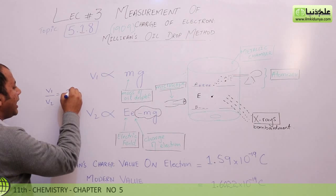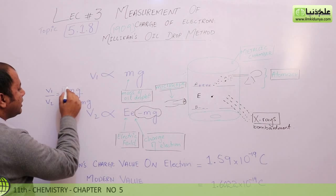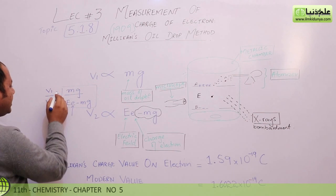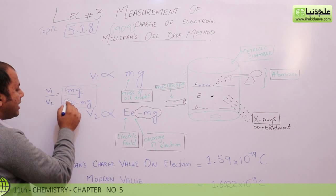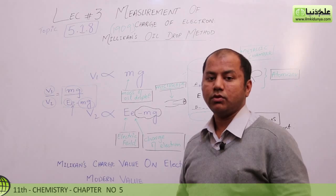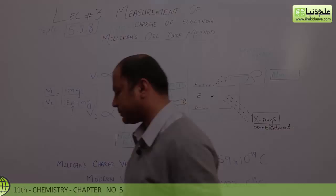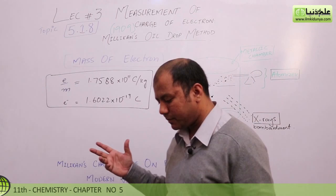We can relate both equations: V1 over V2 equals mg divided by eE minus mg. By placing all the constant values, Millikan concluded the value of charge. How these values are placed and derived, we will learn in higher classes. So that's it — thank you.